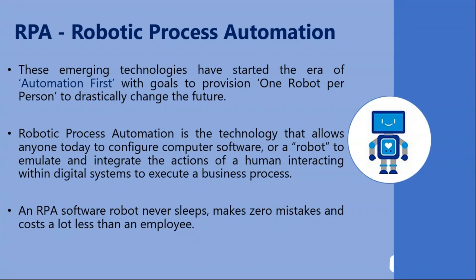RPA is not a hardware robot that walks around your office doing jobs. Robotic process automation is about performing automatic tasks in a user interface. For example, if I want to do some tasks on my laptop and I ask my robot to perform the same actions, you can see on screen the function happening automatically without any human intervention.